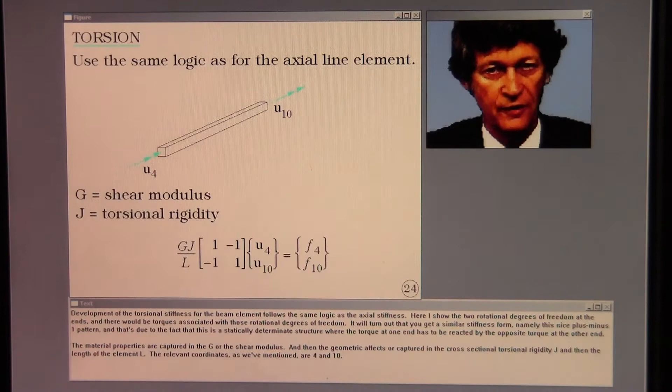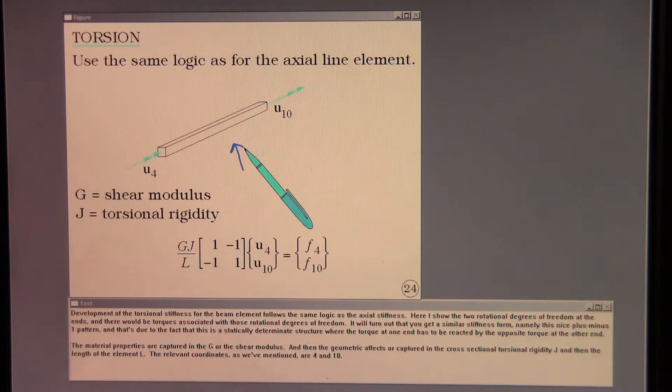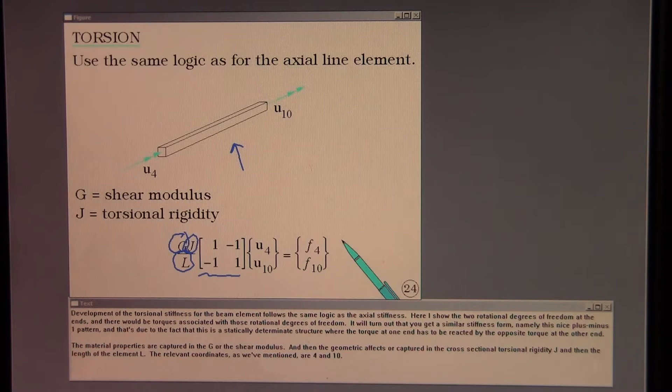Development of the torsional stiffness for the beam element follows the same logic as the axial stiffness. Here I show the two rotational degrees of freedom at the ends and there would be torques associated with those rotational degrees of freedom. It will turn out that you get a similar stiffness form, namely this nice plus minus one pattern. And that's due to the fact that this is a statically determinate structure where the torque at one end has to be reacted by the opposite torque at the other end. The material properties are captured in the G or the shear modulus. And then the geometric effects are captured in the cross-sectional torsional rigidity J and the length of the element L. The relevant coordinates are 4 and 10.